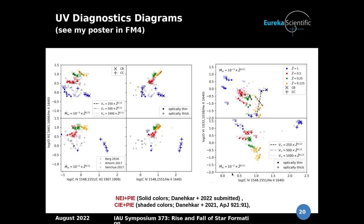We calculated emissivity and by integration we obtained line luminosity, which is comparable to observed flux. For more results you can look at my poster in Focus Meeting 4. I also made UV diagnostic diagrams. In this plot, the light colors are for collisional ionization and the solid colors are for non-equilibrium photo-ionization. For high metallicity we see enhancement of C IV, and for low metallicity we see enhancement of O VI.